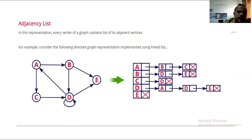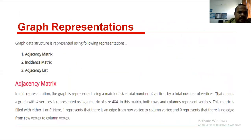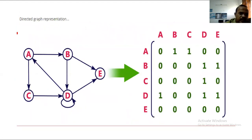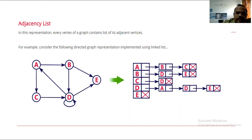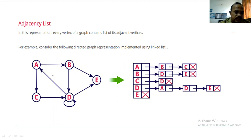The third representation is the adjacency list. In this representation, every vertex of a graph contains a list of its adjacent vertices, implemented using a linked list. Consider the following directed graph with five nodes: A, B, C, D, E.